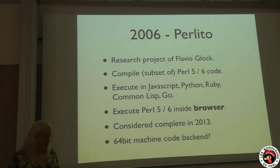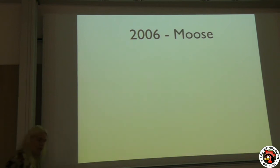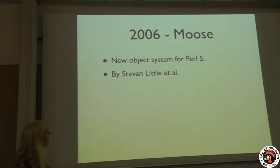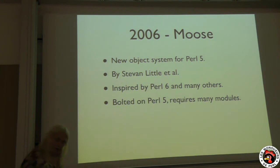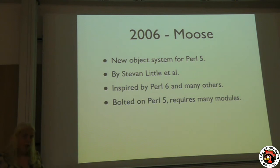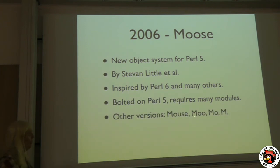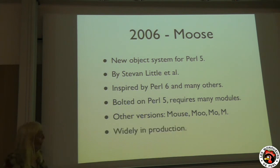In 2006 we had Perlito. Perlito was a research project by Flavio. The idea was to actually compile a subset of Perl 5 and Perl 6 and execute it in JavaScript, or Python, or Ruby, or Go, or whatever. So you can actually now do this inside the browser, because it's actually executing JavaScript. It is a subset of Perl 5 — it doesn't do modules, for instance. It was actually considered complete in 2013, but only recently I've seen commits of Flavio creating a 64-bit machine code backend.